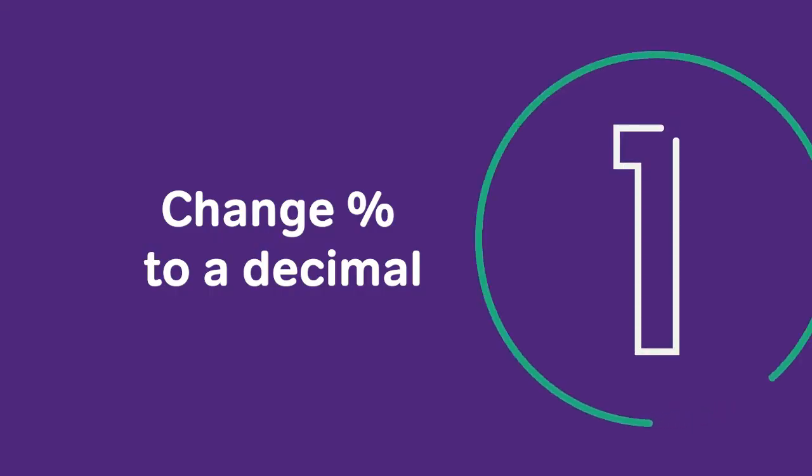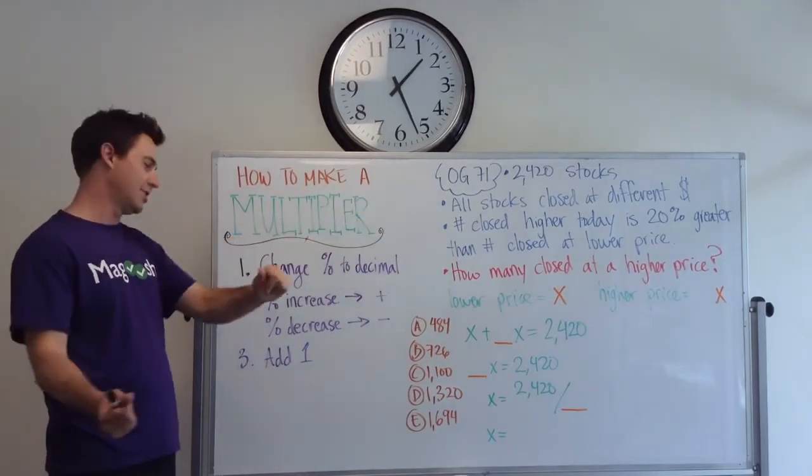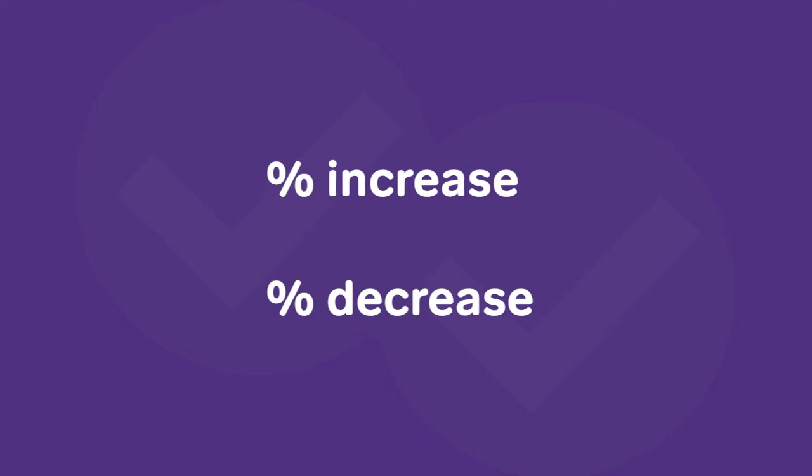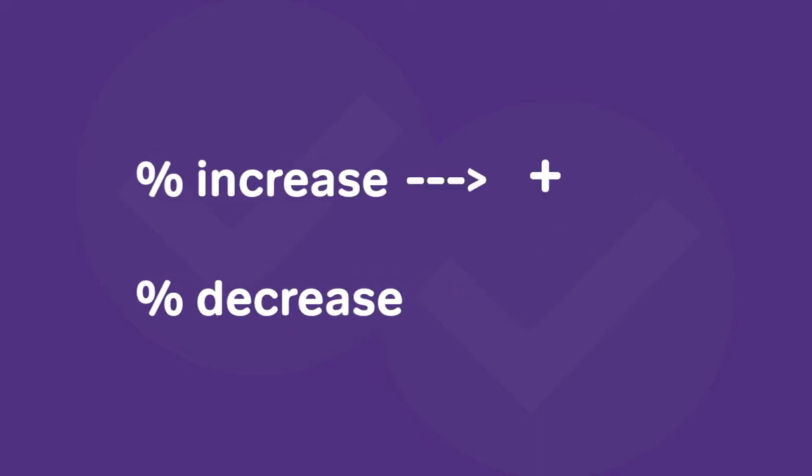First, you're going to have a percent and you want to change it to a decimal. That's pretty easy. Next, you have two options in step two. If it's percent increase, then you're going to make your decimal positive. If it's a percent decrease, then you're going to make your decimal negative.